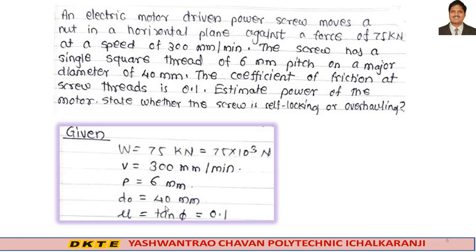The coefficient of friction at screw threads is 0.1, meaning mu equals tan phi equals 0.1. Estimate the power of the motor. Also state whether the screw is self-locking or not.